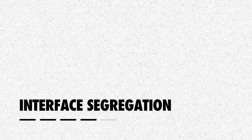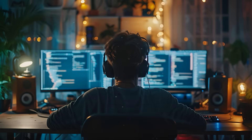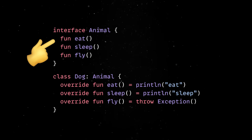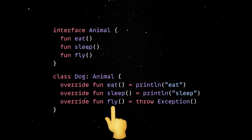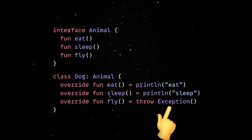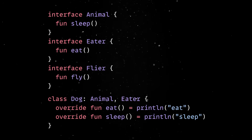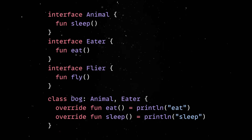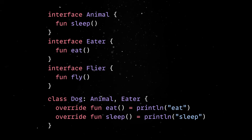The Interface Segregation Principle is also pretty straightforward: don't make clients implement interfaces they don't actually use. Imagine you have an interface called animal with methods like eat, sleep, and fly. A dog class implementing this interface would have no use for the fly method, but it's still forced to include it. This leads to awkward workarounds like empty or stubbed methods, which defeats the whole purpose of clean design. Instead, break large interfaces into smaller, more focused ones — for example, separate eater and flyer interfaces — so classes only implement what they actually need.